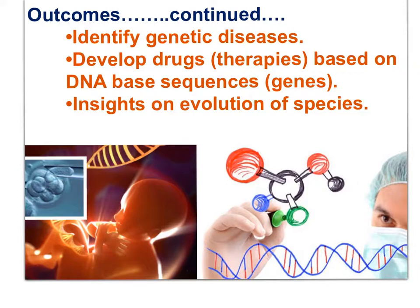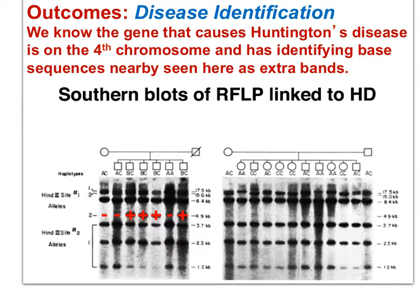The Human Genome Project opened doors on disease identification. Scientists determined that the gene for Huntington's disease is on the fourth chromosome and has a non-coding repetitive region nearby that is now used as a marker to identify whether someone carries the gene.